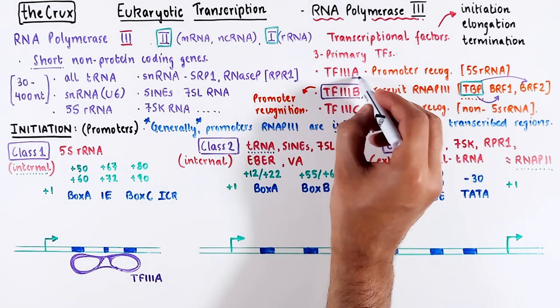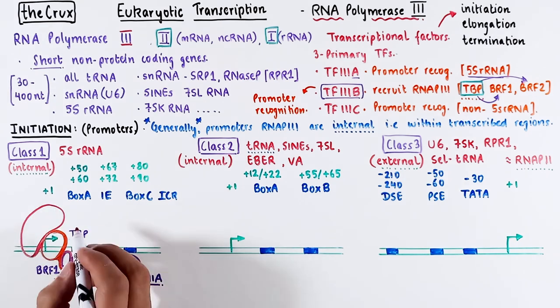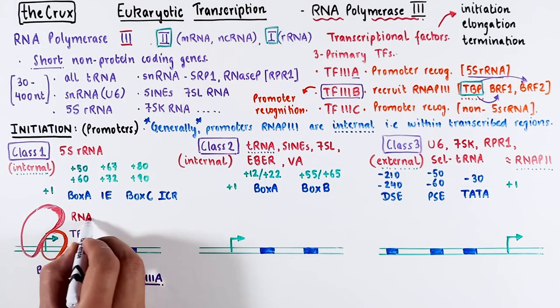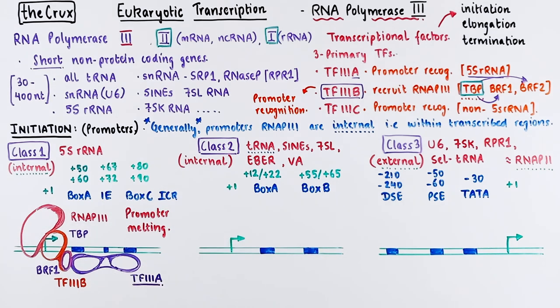TF3A is specific to ribosomal RNA. Factor A then recruits TF3B, with the recruitment depending on the BRF1 subunit of the factor B. Once TF3B is in place, RNA polymerase 3 is loaded at the start site, and this complex then can open the promoter, allowing it to move into the elongation phase.